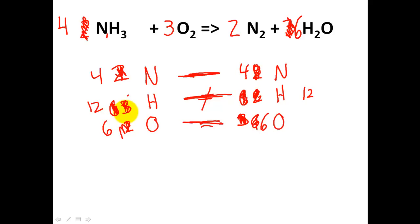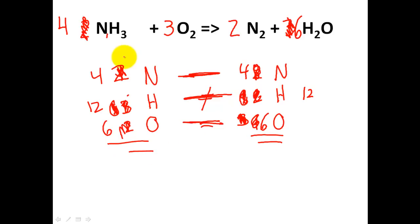That was a really messy equation. Sometimes you'll get those — just work them out. Your atom inventory is really key to doing this problem well and avoiding mistakes. So the final coefficients are four, three, two, and six. That was a tough one.